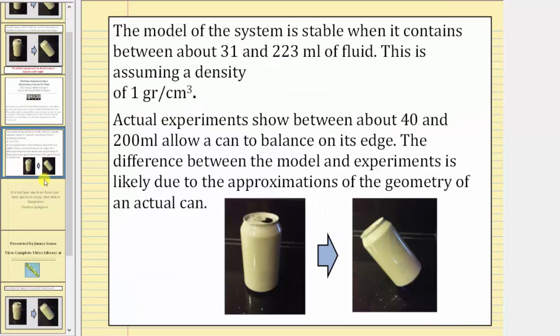So more specifically, for this particular model, the system is stable when it contains between 31 and 223 milliliters of fluid. This assumes a fluid density of one gram per cubic centimeter.